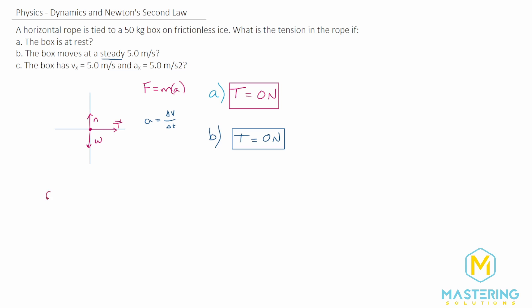Now lastly, for part C, we need to find what the tension in the rope will be if the box has a velocity of 5 meters per second and an acceleration of 5 meters per second squared. And for this one, we actually don't care about what the velocity is. All we care about is the change in the velocity for the acceleration here.